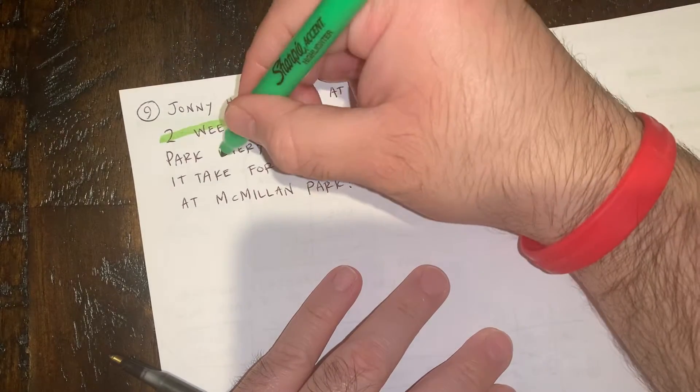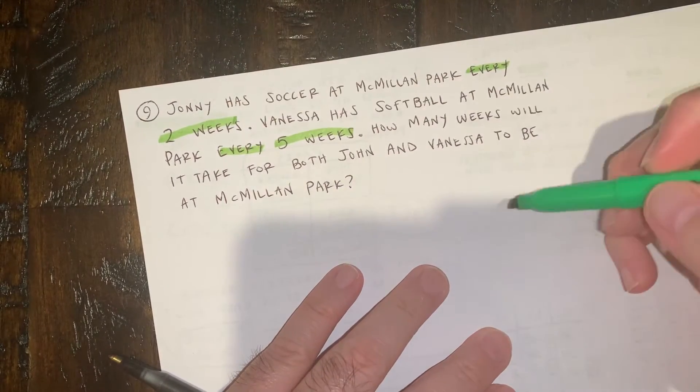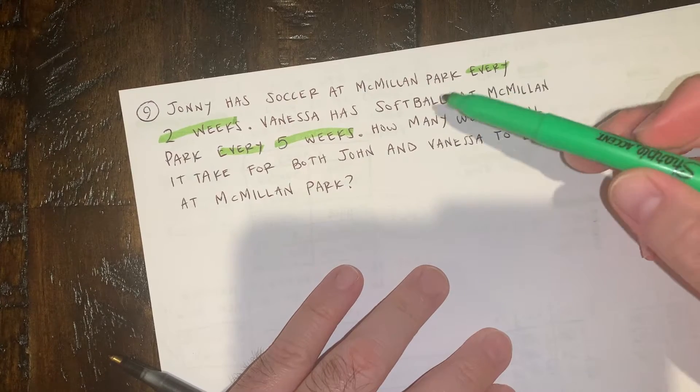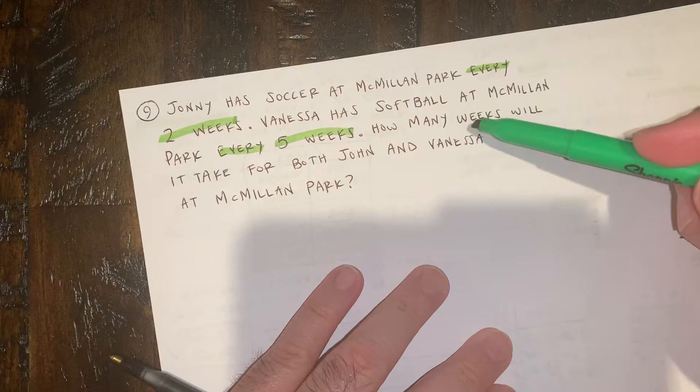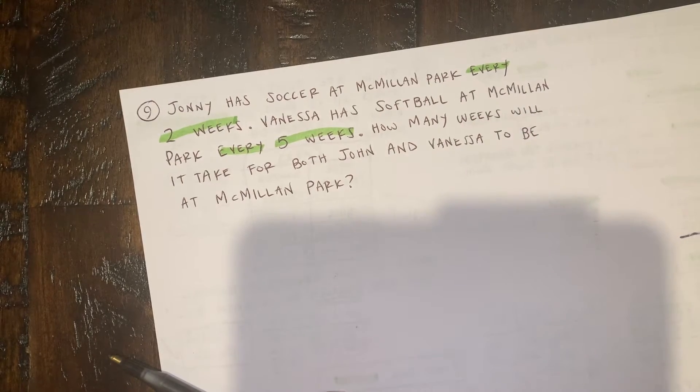So every five weeks, she is going to Macmillan Park. Now, what I want to know is, how many weeks will it take for both John and Vanessa to be at Macmillan Park at the same time?